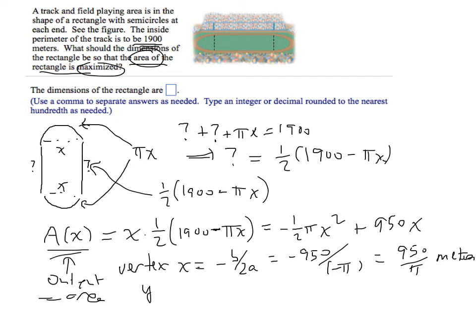The y-coordinate of the vertex we get from plugging our x-coordinate, 950 over pi, in for x in the A of x formula. If I do that, I'll have x times one half, so 950 over pi times one half is 475 over pi. That's what my one half x will be, 475 over pi.